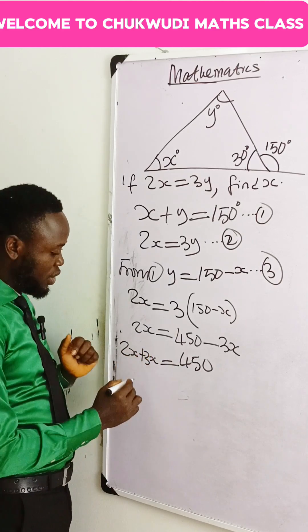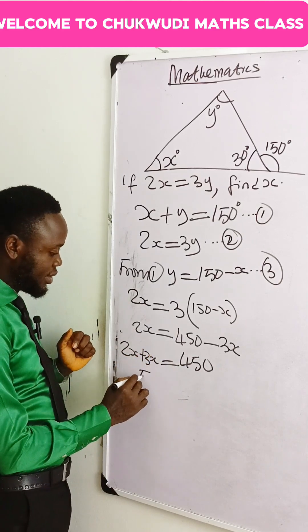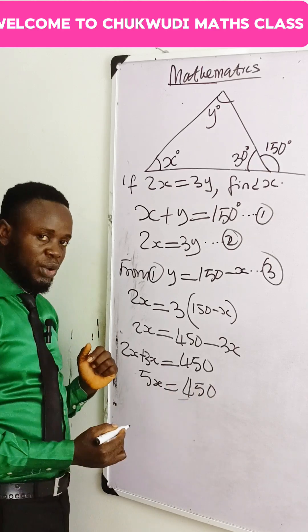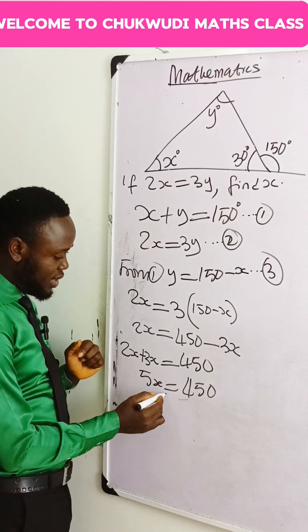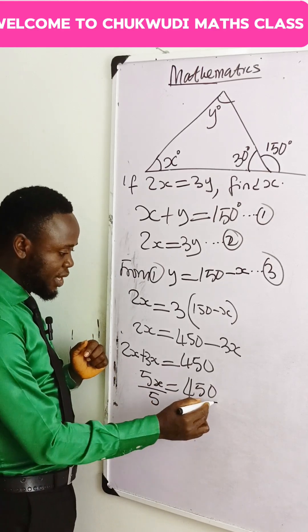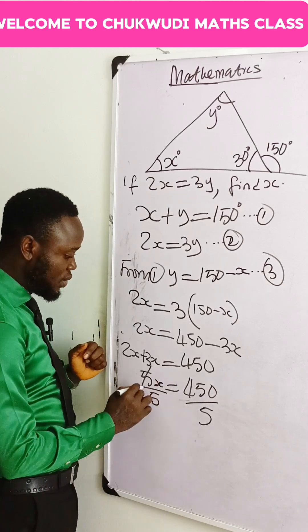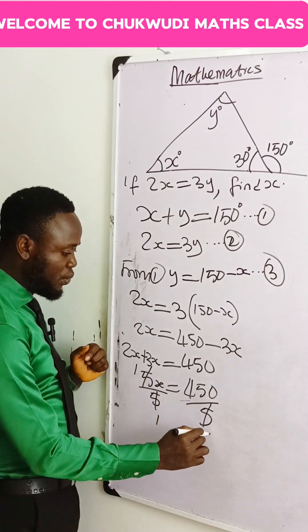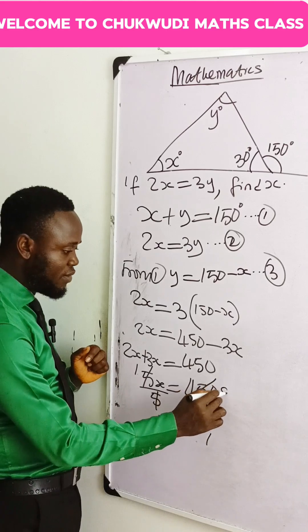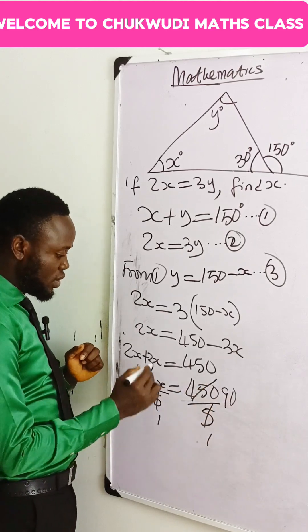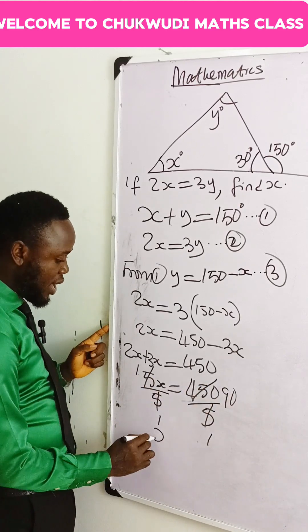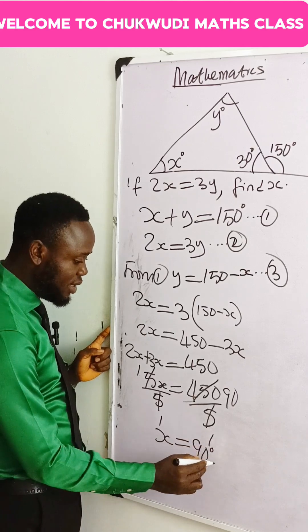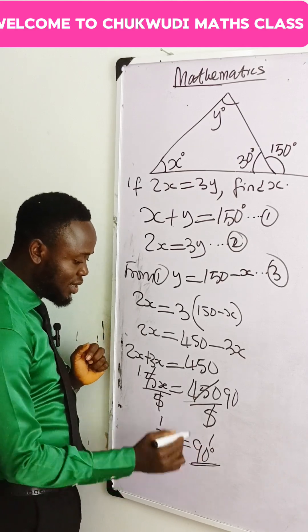Then 2x plus 3x gives us 5x, which is equal to 450. We divide both sides by 5, so 5x divided by 5 gives x, and 450 divided by 5 gives 90. So x, which is what we need to find, is equal to 90 degrees — our final answer.